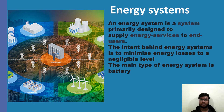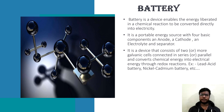The main type of energy system is the battery. A battery is a device which enables energy liberated in a chemical reaction to get converted into electricity. It is a portable energy source with four basic components: anode, cathode, electrolyte, and a separator. It consists of two or more galvanic cells connected in series or parallel, and converts chemical energy into electrical energy through redox reactions. Examples include lead acid battery and nickel cadmium battery.